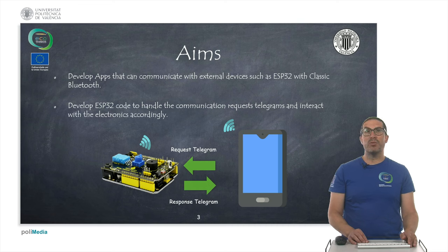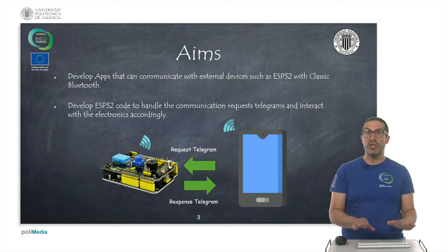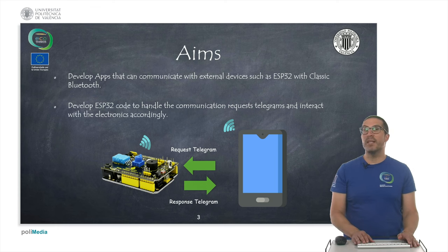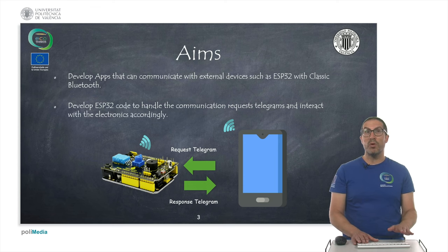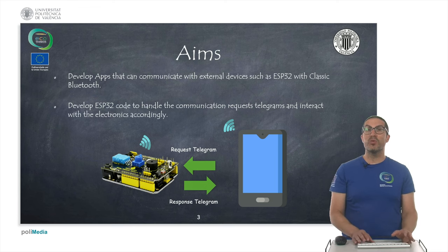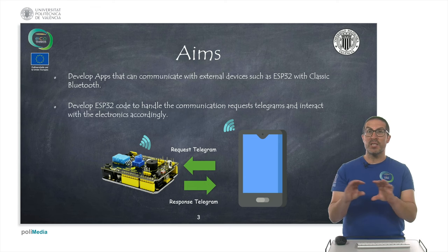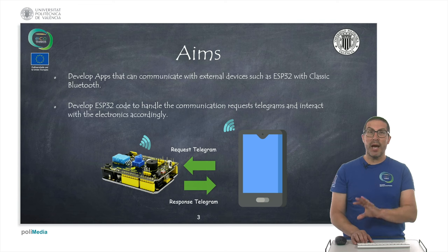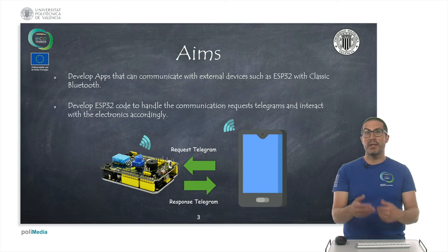Our aim is to develop an app that communicates with an external device using classic Bluetooth, such as an ESP32. We also need to develop code on the ESP32 side to handle the correct communication requests sent by the app and provide responses. For that we use what we call a telegram — data with a specific structure that is sent from the app to the electronics, and then the electronics respond back to the app where all this data is processed and decoded.